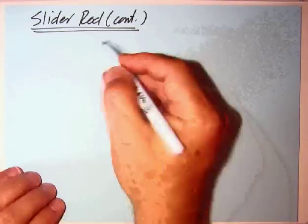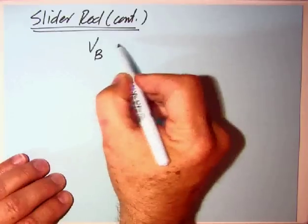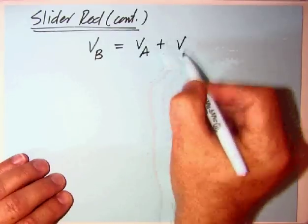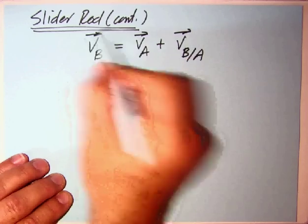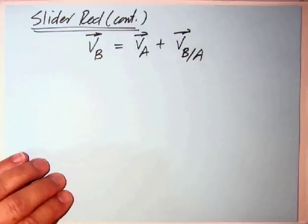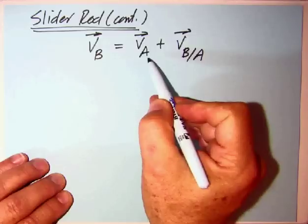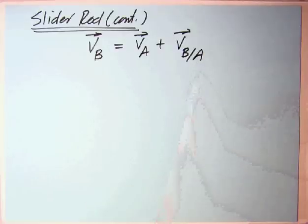You might have done this first, but we need to have an equation in which we know everything but omega. Since we know everything about A and B, we might write down this equation. The velocity of B equals the velocity of A, we know both of those, plus the velocity of B relative to A, as if A is fixed.